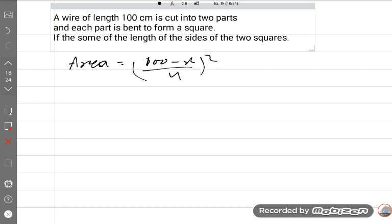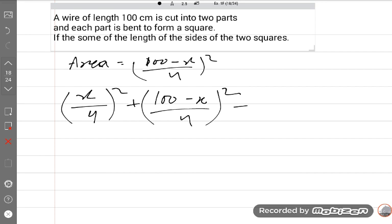According to the question, x upon 4 plus 100 minus x upon 4, the sum of both areas is equal to 425. So we will solve this question further. We will make this a quadratic equation.